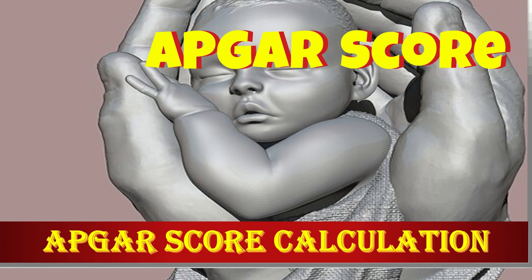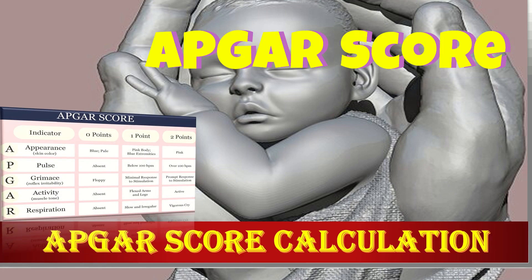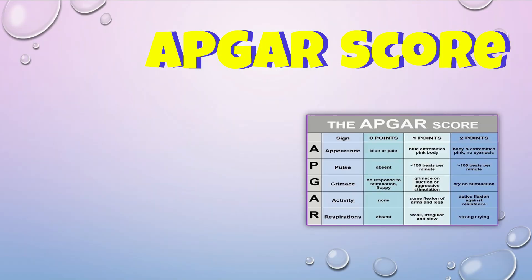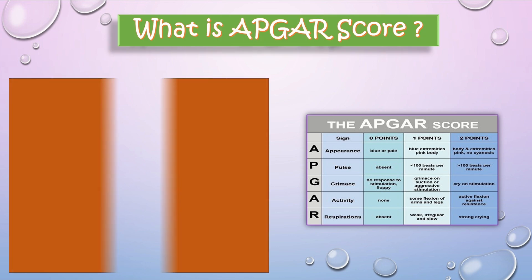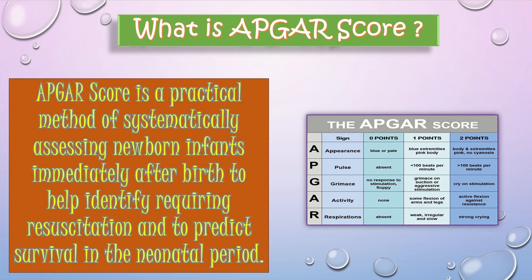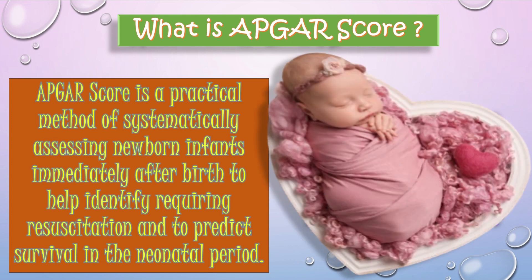APGAR score calculation is the topic of our discussion today. APGAR score is a practical method of systematically assessing newborn infants immediately after birth to help identify those requiring resuscitation and to predict survival in the neonatal period.